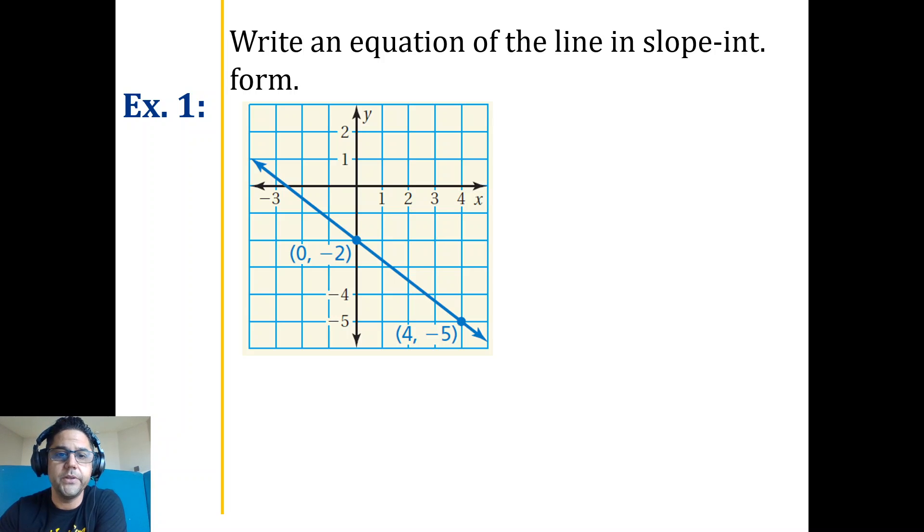So in order to find your slope, it's really just a continuation of what we've been doing, which is rise over run. So we can go ahead and count that. Or you could also use your formula that we've been practicing, which is your basic substitution.